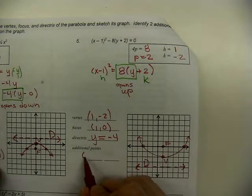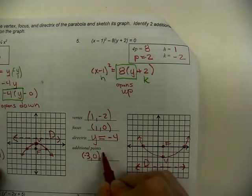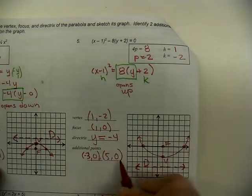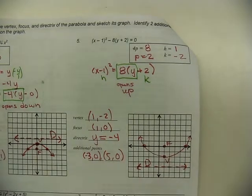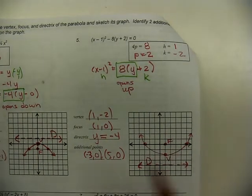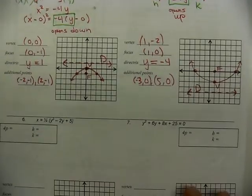Those additional points are at (−3, 0) and (5, 0). So there are two examples — one opening down and one opening up. Let's look at the next one.